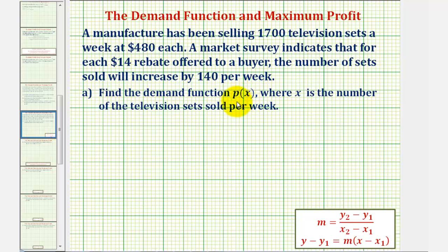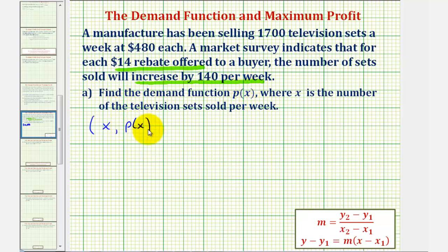We'll begin by determining the demand function P of X. Because we're told that for each $14 rebate, the number of television sets sold will increase by 140 per week, this indicates that P of X will be a linear function. Any point on P of X has an X coordinate of number of televisions sold and a Y coordinate of P of X, which is the price. We'll find two points, then find the slope and equation using point-slope form. For the first ordered pair, we know 1,700 televisions are sold when the price is $480.